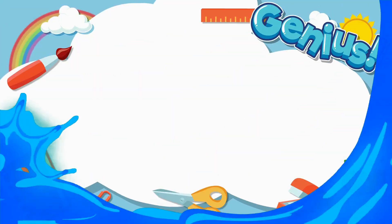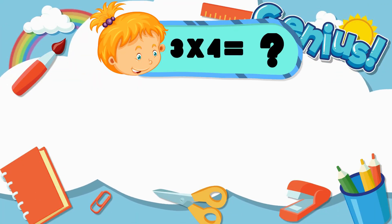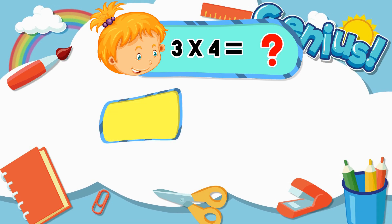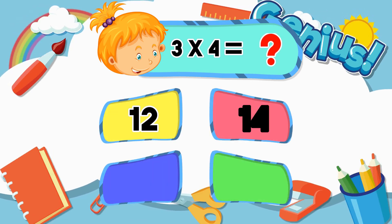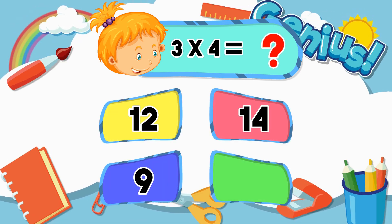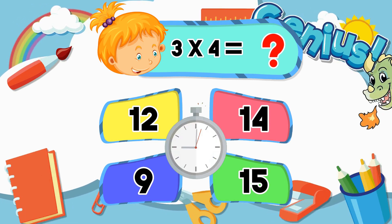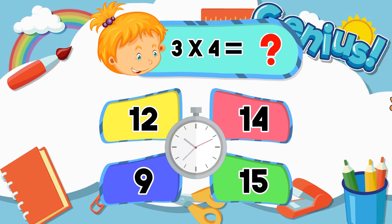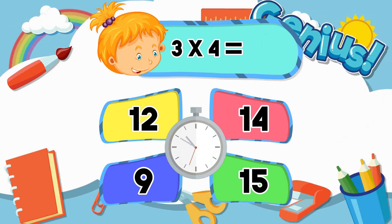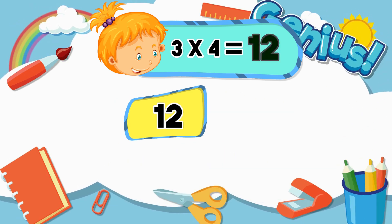What is three times four? Options: Twelve, Fourteen, Nine, Fifteen. Answer: Twelve.